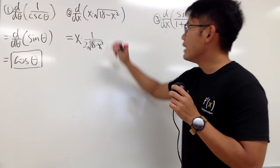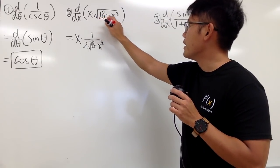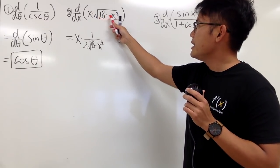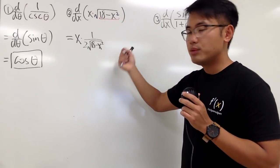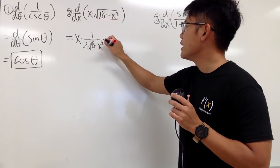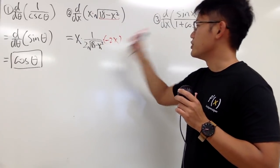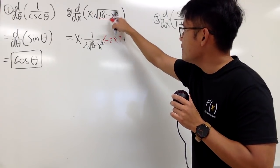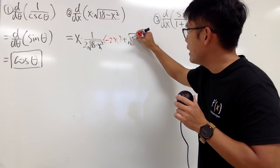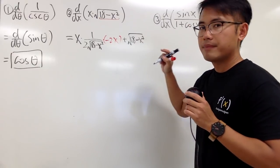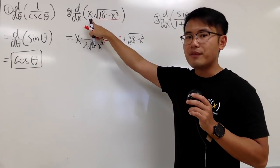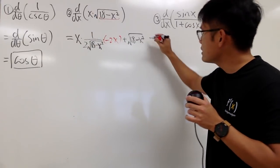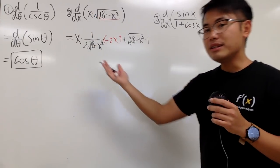And then, you have to remember, the chain rule says, we have to multiply by the derivative of the inside function. Derivative of 18 is 0. Derivative of negative x squared is negative 2x. So, we multiply by negative 2x because of the chain rule. And then, continue. We have to add the second function, which is square root of 18 minus x squared. Then, we multiply by the derivative of the first. Derivative of x is just equal to 1. So, that's nice.